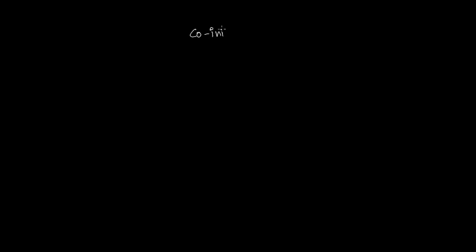In the previous video we discussed equal vectors, then we learned about the negative of vectors. Now let's talk about co-initial vectors. From the name, co means together and initial means starting, so those vectors which start together from the same point are called co-initial vectors.